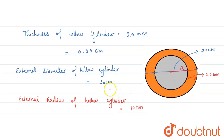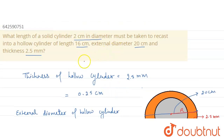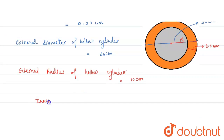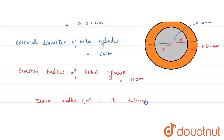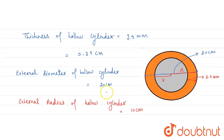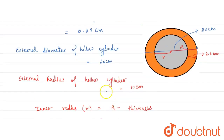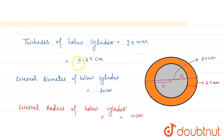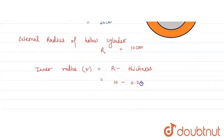So from the center to the outer edge, this is capital R. Now we can find the inner radius, represented by small r. Inner radius is from the inner edge to the center, so small r is equal to capital R minus thickness, which equals 10 minus 0.25, giving us 9.75 centimeters. This is the value of small r.